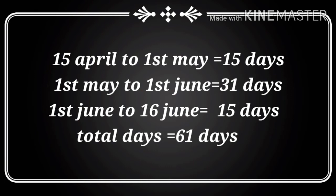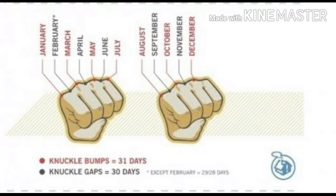कभी-कभी calculation करते समय हम last date को include करते हैं और कभी नहीं करते। जैसे इस question में 1st June to 16th June था — यानि 16 days नहीं, 16 में से 1 minus करेंगे तो 15 days होगा। (Sometimes when calculating we include the last date and sometimes we don't. Here, 1st June to 16th June gives 15 days, not 16.)